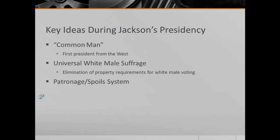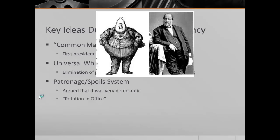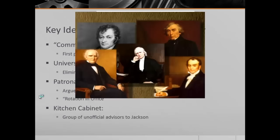Patronage, or the spoils system, is very, very important to know. This was rewarding political supporters with jobs. Andrew Jackson argued this was actually democratic because it led to a rotation in office, so you constantly had new people coming in. Later on, this leads to problems such as Boss Tweed and others who take advantage of the spoils system. Finally, we have the kitchen cabinet — a group of unofficial advisors to Jackson. Many were newspaper writers, and none were approved by the Senate. People felt they had too much power since they did not have to answer to anyone.